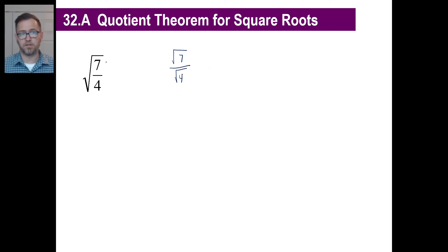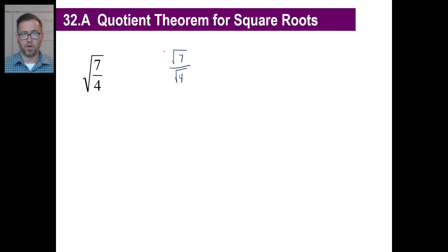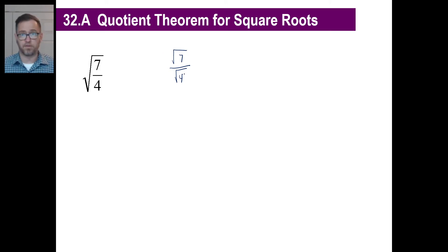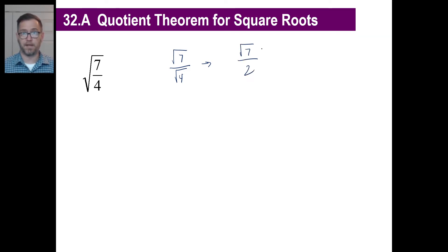You can actually stick in, if you want, to your calculator, seven divided by four, and then go square root and you'll get an answer. Then you can go, okay, the square root of seven divided by the square root of four — you'll get the same answer. We know what the square root of four is in this case. So we can just go, okay, square root of seven over two. That's our answer, right, broken down.